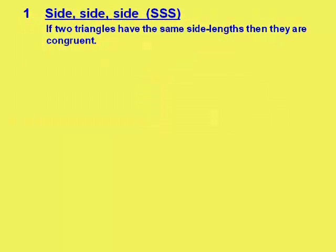If you have three sides the same in each of the two triangles, then those triangles are congruent. It's usually abbreviated to SSS, side, side, side.